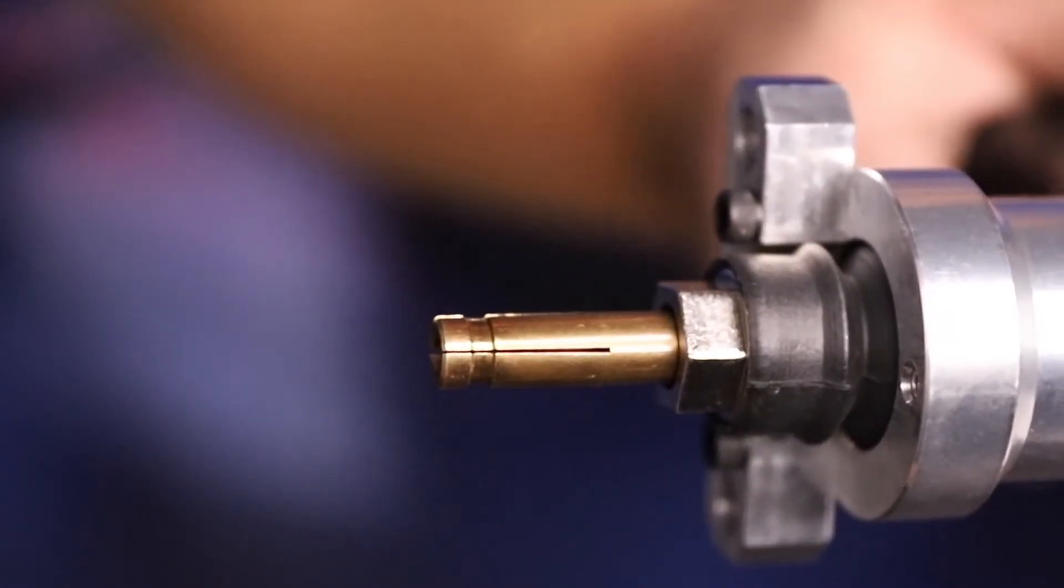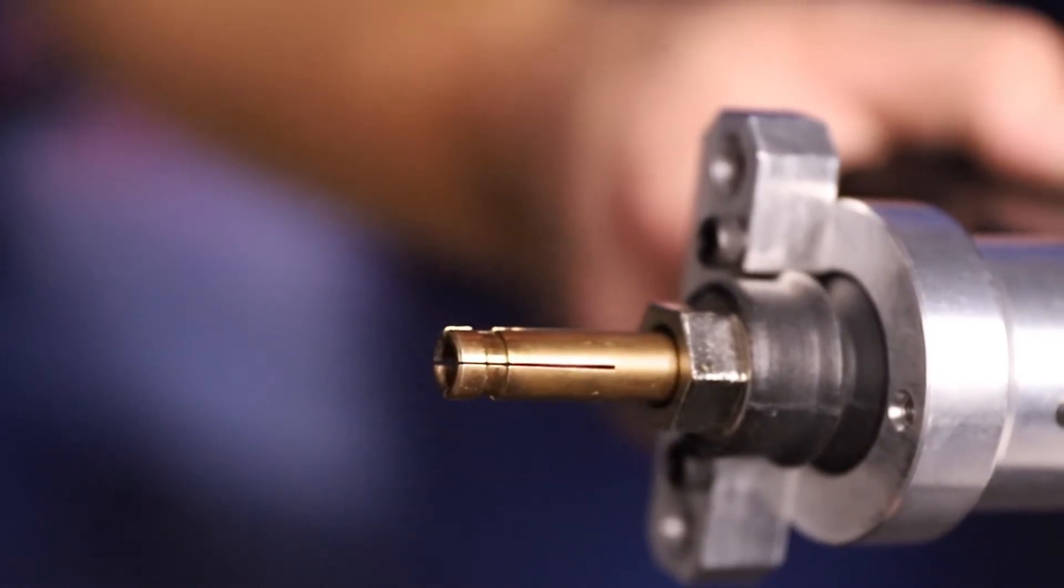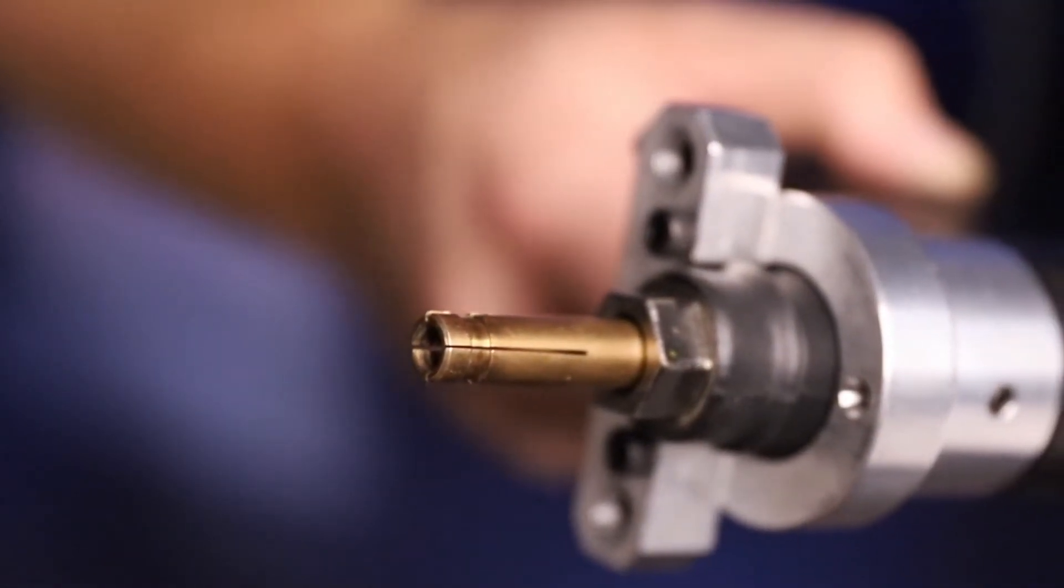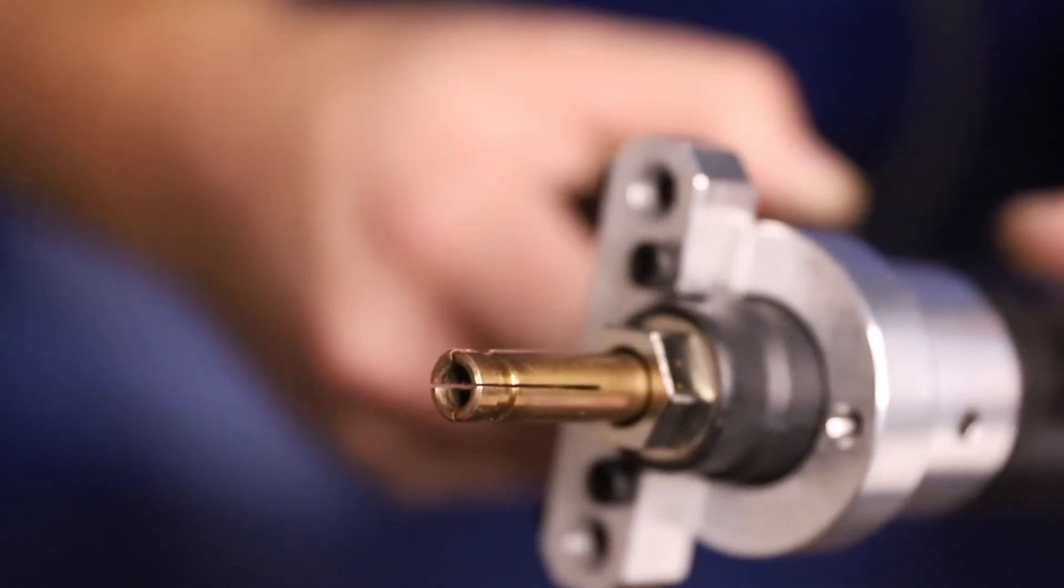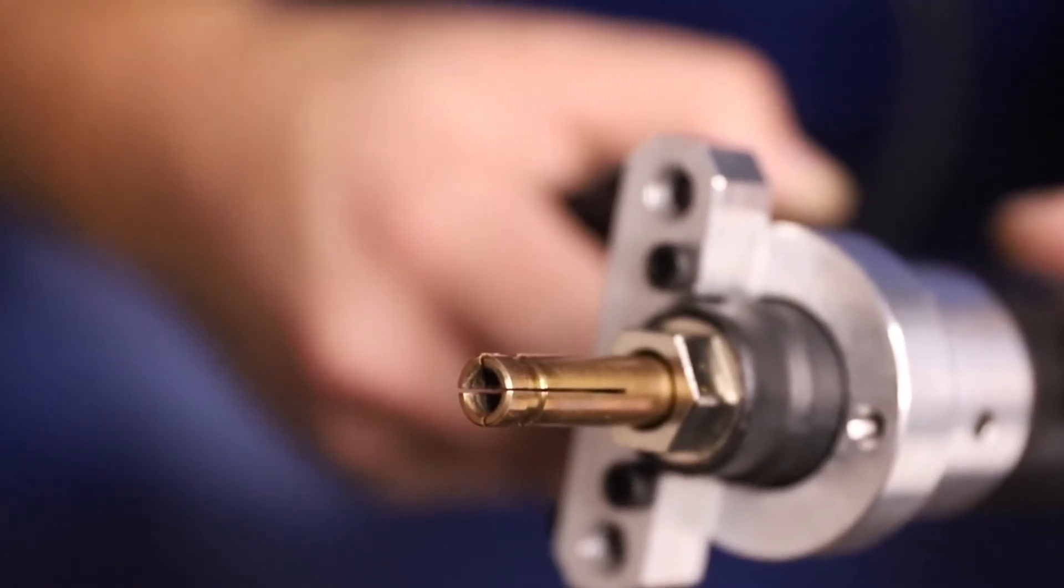Collet condition is paramount to getting quality welds. This collet is missing its O-rings. Using loose, worn, or damaged collets can lead to arc damage of the studs.